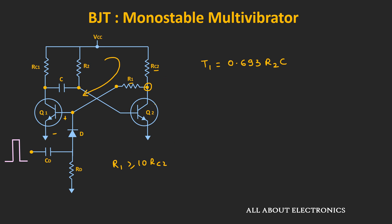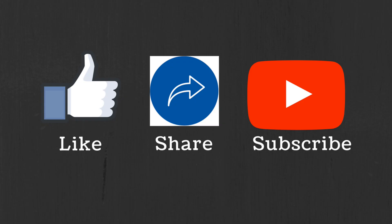I hope in this video you understood how the monostable multivibrator can be designed using the BJT. If you have any questions or suggestions, let me know in the comment section below. If you like this video, hit the like button and subscribe to the channel for more such videos.